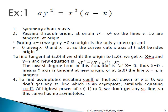To find intercepts: putting x = 0 gives y = 0, so the origin is the only y-intercept. Putting y = 0 gives x = 0 and x = a, so the curve cuts the x-axis at (a, 0). To find the tangent at (a, 0), shift the origin: put x = X + a, y = Y. The new equation is aY² = (X + a)²(−X). The lowest degree term is −a²X = 0, giving X = 0, so the line x = a is the tangent at (a, 0).